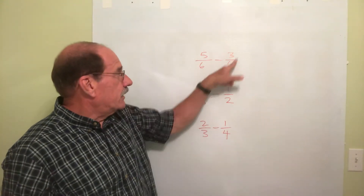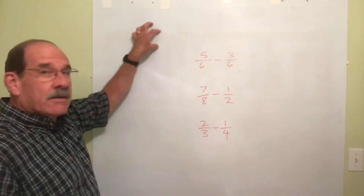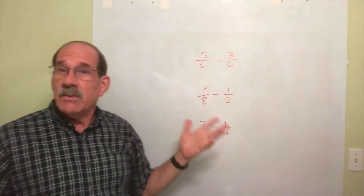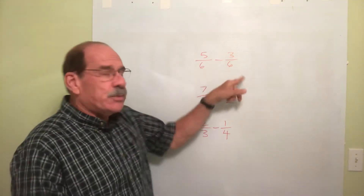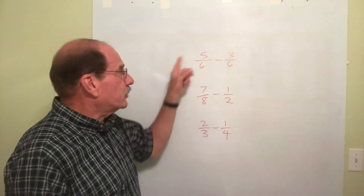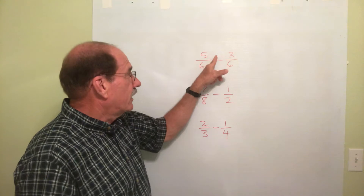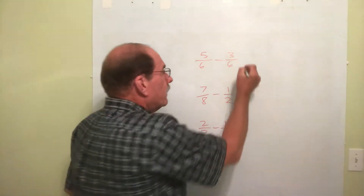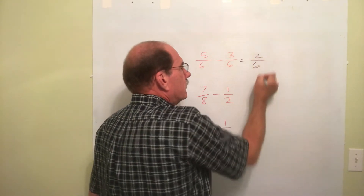5/6 minus 3/6. You could write these up and down or side to side — there's no difference in what you do. Since we have a common denominator, we're good to go. All we have to do is subtract the top numbers. It's just 5 minus 3, that makes 2. So the answer on top is 2/6.